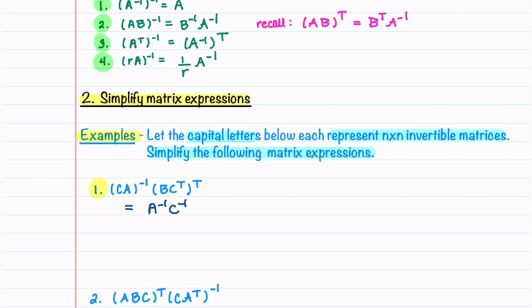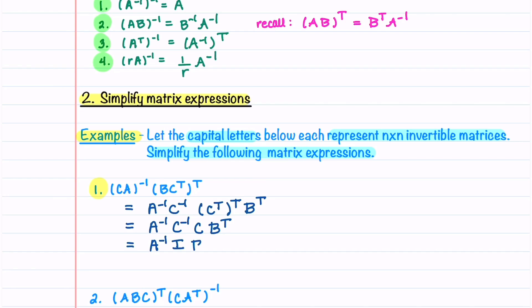And then our second expression is equal to C transpose transpose times B transpose — we also switch the order for those. Working from left to right, this gives us A inverse, C inverse. And then C transpose transpose is equal to C, and then we have B transpose. We now have A inverse times C inverse times C, which is the identity matrix, times B transpose. This gives us the expression A inverse B transpose. The identity matrix is just like multiplying by 1, so we don't need to write it down. This is the most simplified form of this expression.